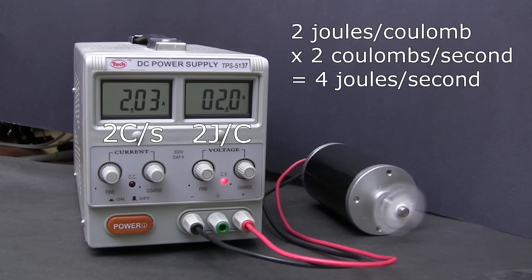If we increase the power supply's voltage to 2 volts, the higher voltage pushes more current, and now we have 2 coulombs per second flowing. 2 volts multiplied by 2 amps means that 4 joules of energy are flowing through this motor every second. And of course with more energy flowing through the motor every second, obviously the motor is going to do more work and spin faster.